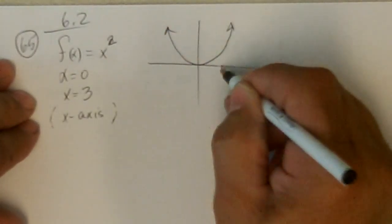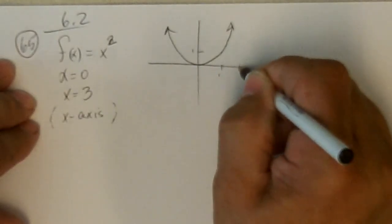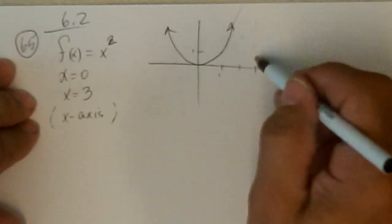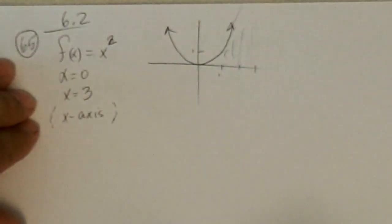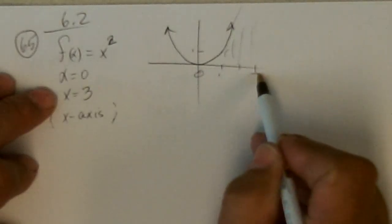All right, at 1 it's at 1, at 2, and at 3 it's at 9. They want that area between 0 and 3.